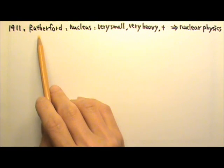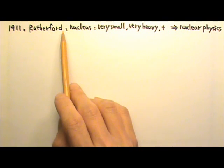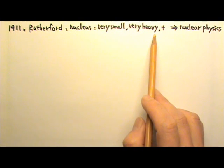In 1911, Rutherford published his planetary or nuclear model for atoms. He said that an atom has a nucleus that is very small, very heavy, and positively charged.